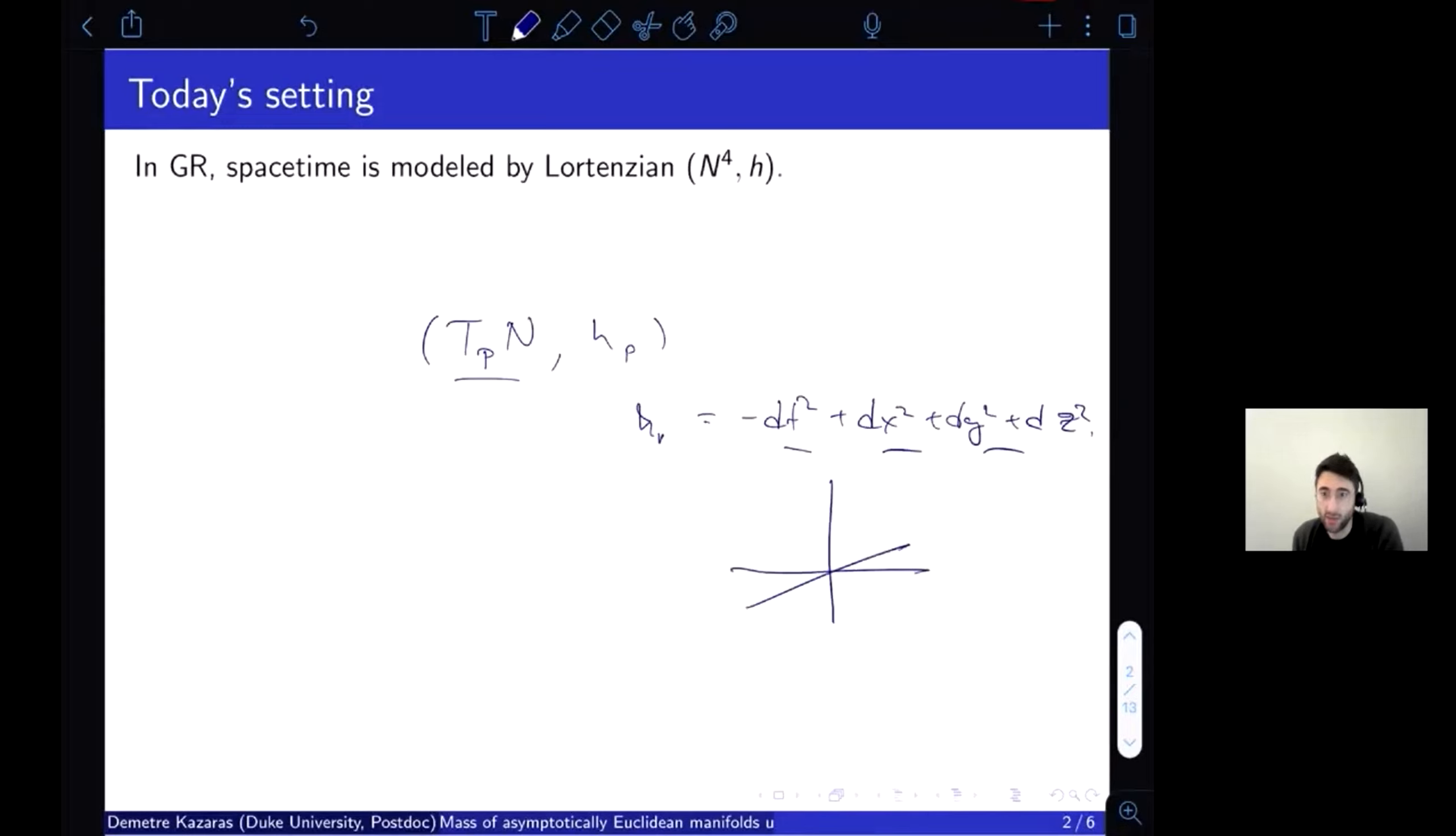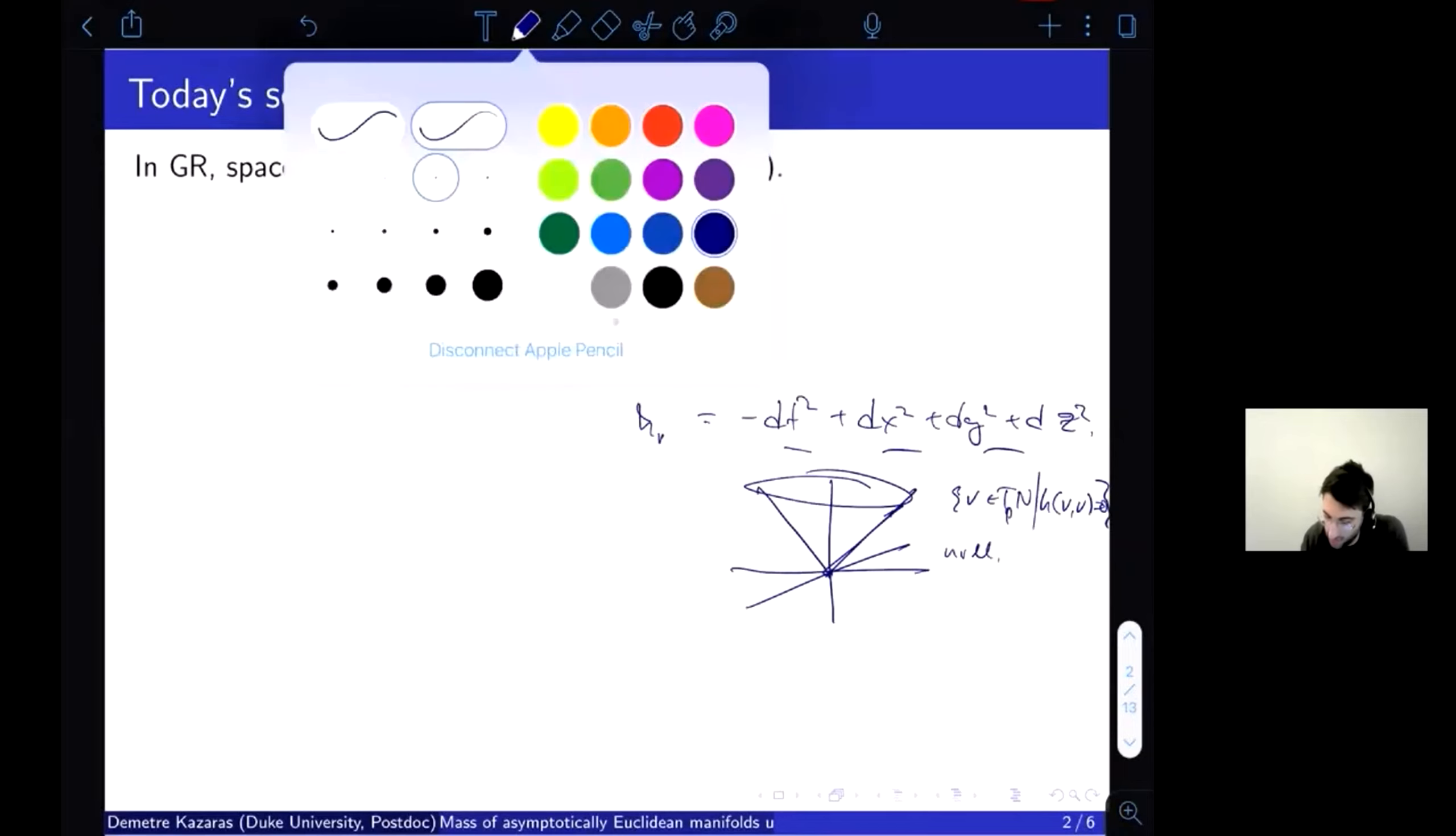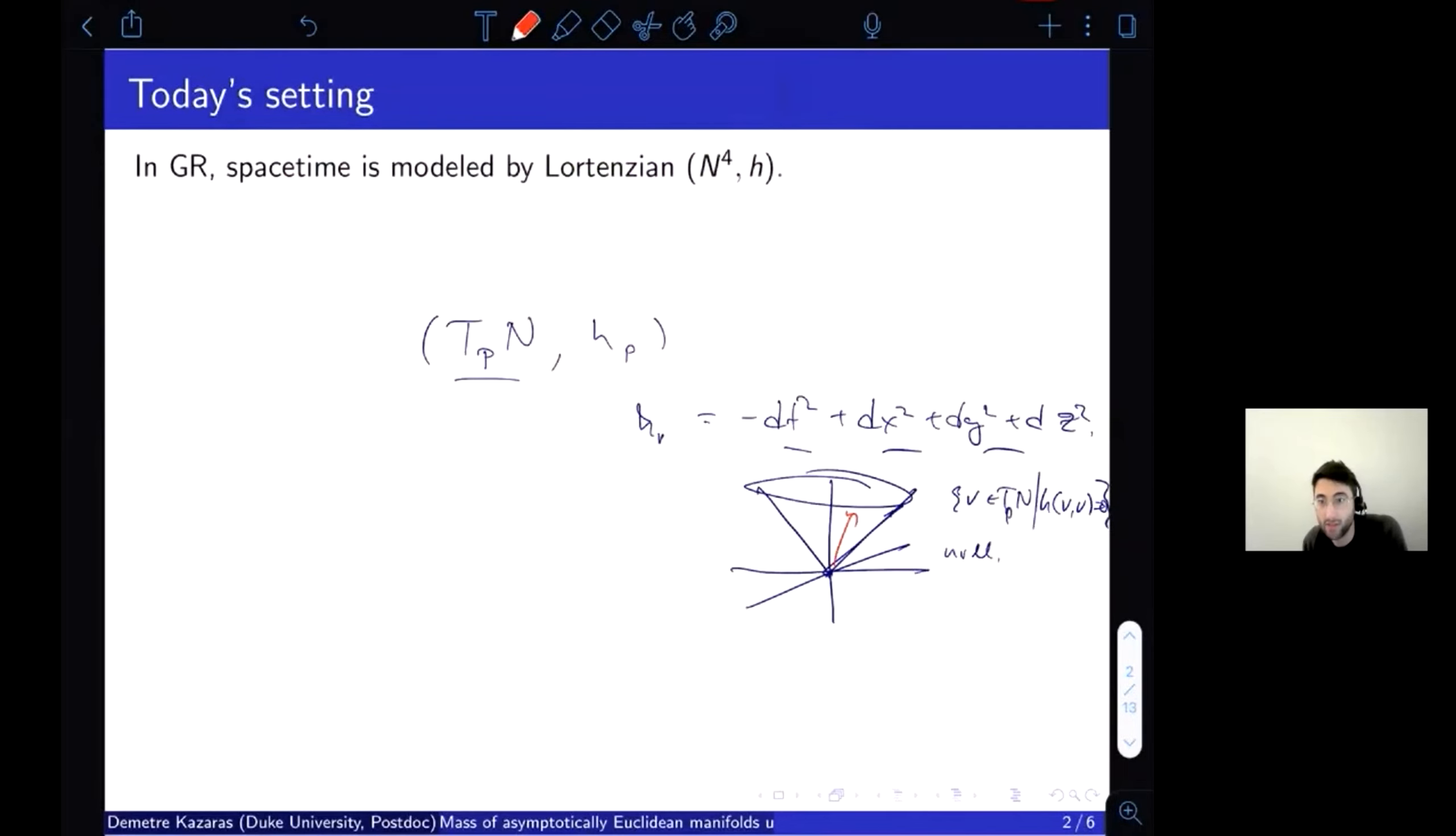So you have a distinguished time direction which has a negative length, and the metric is positive definite in the complementary hypersurface, hyperplane. So you have some different kinds of vectors. If a vector points more in the time direction than it does in the spatial X, Y, Z directions, you would say this is time-like. And if it points more in the spatial directions than in the time direction, in other words, the length is greater than or equal to zero when measured with H, then you would call this a space-like vector.